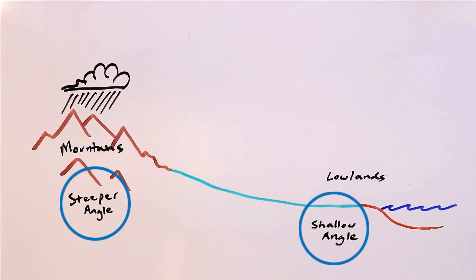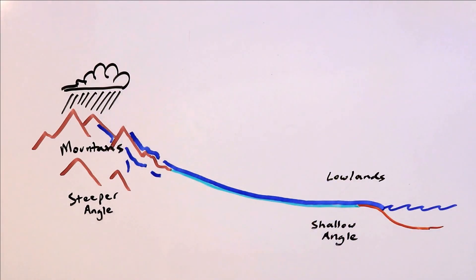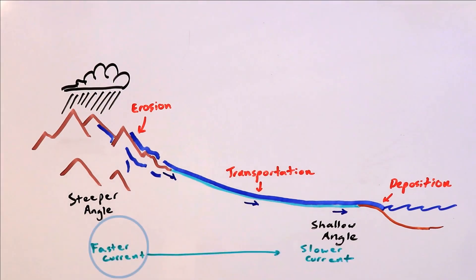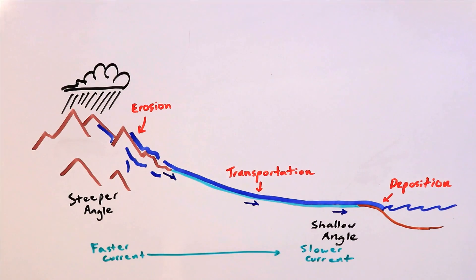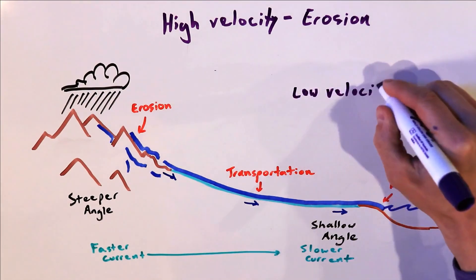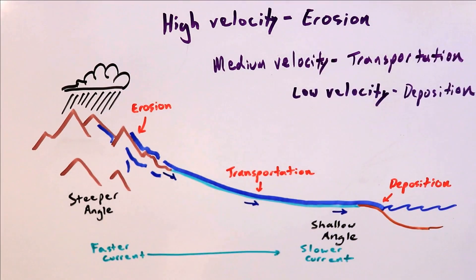When it rains or snows in the mountains, water runs down from the steeper highland areas and flows toward the shallower lowland areas. In the highlands we observed erosion — sediment is removed. In the lowlands we observed deposition — sediment is dropped off. In the middle, we saw transportation, where sediment simply travels through. In highland areas, water moves at high velocity because of the steeper angle. As water approaches the lowlands, it slows down due to the reduced angle. So: high velocity produces erosion, where water picks up sediment; low velocity produces deposition, where the current can no longer carry sediment and drops it off; and medium velocity results in transportation, where sediment is simply carried along.